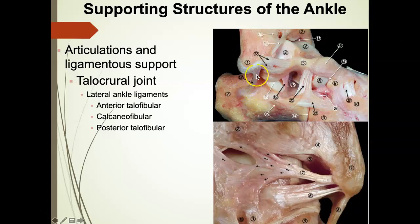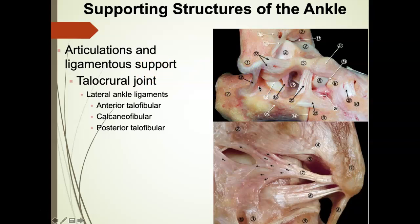The calcaneal fibular ligament has a distal attachment to the calcaneus and a proximal attachment to the fibula, giving it its name. It is the major resistor to calcaneal inversion. Any injury to it will produce an increase in calcaneal inversion — normative was about 20 degrees, so with a rupture you could see 25 to 30 degrees. The anterior talofibular ligament is the major resistance to anterior talar translation. When it's ruptured, that talus is allowed to slide anteriorly and has a hard time translating posteriorly.